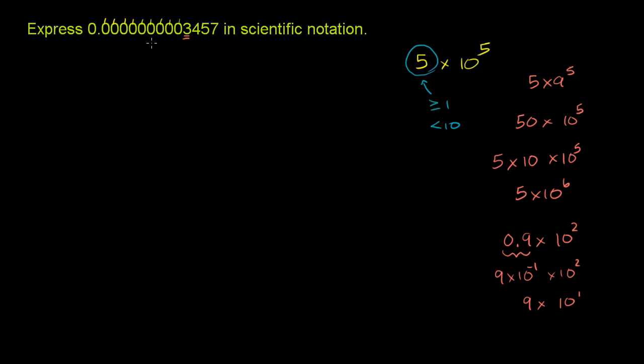So a very quick way to do it, and I'll explain in a second why it works, is we could rewrite this as 3.457 times 10 to the—and remember, we had 9 zeros: 1, 2, 3, 4, 5, 6, 7, 8, 9. And then I count the 3, 10.